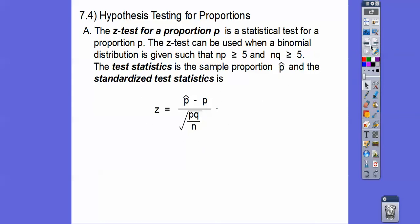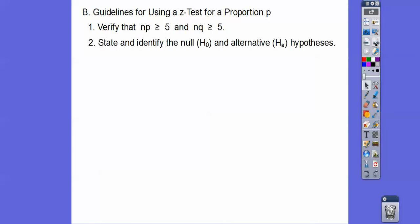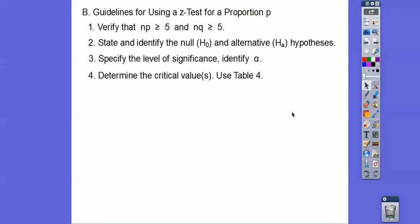Guidelines for using a Z test for proportion P: First, verify that NP and NQ are greater than or equal to 5. State your null and alternative hypotheses. Specify the level of significance - usually 10%, 5%, or 1%. If it's a two-tail test at 10%, you're looking for 5% on either end. So 5% on the left and 95% on the right for the Z score.